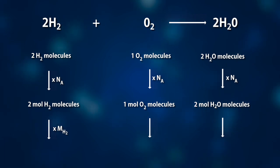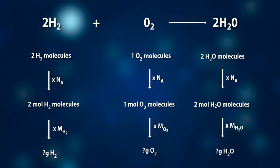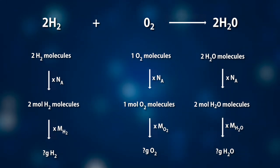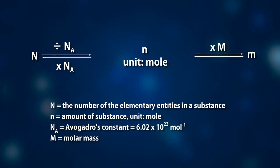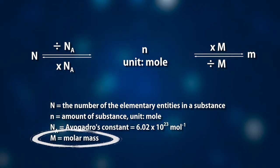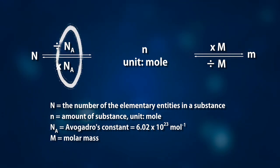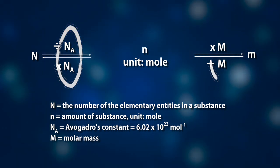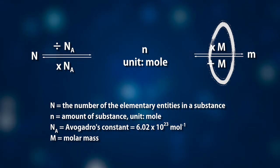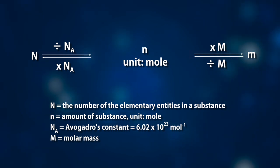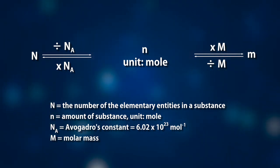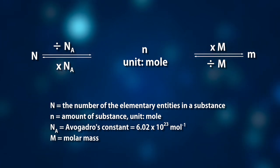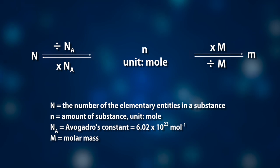How can we measure two moles of hydrogen, one mole of oxygen, or two moles of water? We don't have tools to do it directly. However, if we know the mass of one mole of hydrogen, oxygen, or water, we can convert the amount of substance into mass, which can be measured by any scale. The mass of one mole of a substance is called its molar mass, symbol M. So Nₐ is the first conversion factor transferring the number of invisible particles to the amount of substance, and M is the second conversion factor transferring the amount of substance to mass.